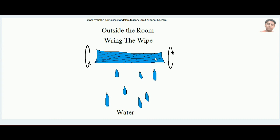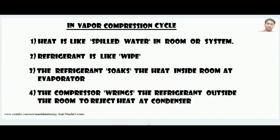If there is more water, untwist the cloth or wipe, put it over the water again, and it will absorb the water again. Then ring it outside the room so the water is squeezed out. By this way, the entire water spilled over the floor can be removed.